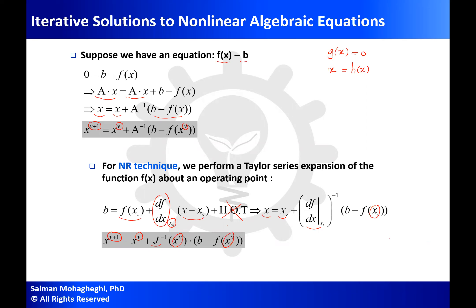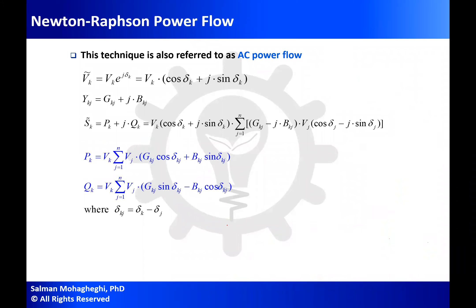Here, like before, you start with initial conditions to find x(1), plug in x(1) to find x(2), and continue this process. How do we apply this to AC power flow? Recall that we had an equation of the form S̃_k = Ṽ_k times the conjugate of the summation over j from 1 to n of Y_kj Ṽ_j. This is what I had for the Gauss and Gauss-Seidel techniques.